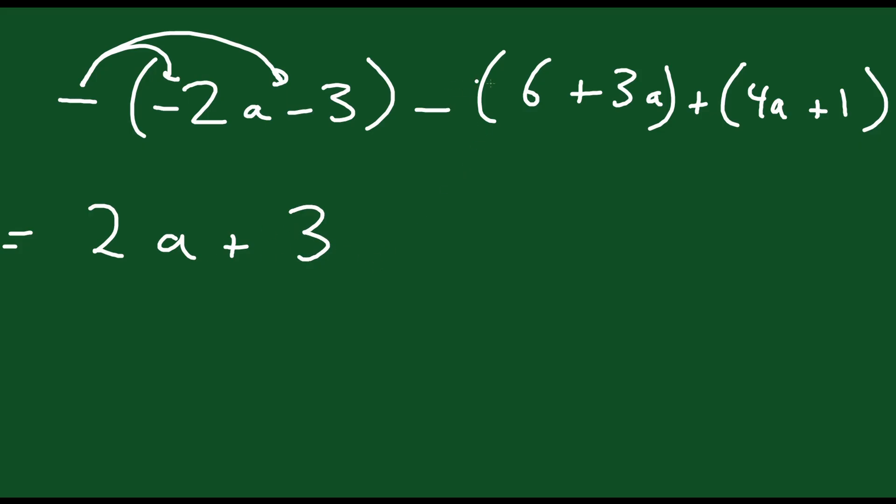Same thing for this bracket here. You want to bring in the negative just like that. So you get negative 6 minus 3a. And this is a positive so those are going to stay the same. Plus 4a plus 1.